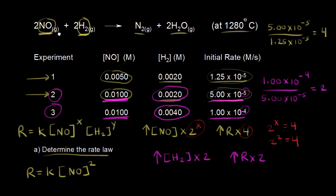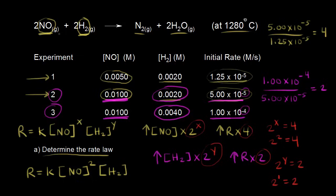So two to what power equals two? Two to the Y equals two, so Y equals one — two to the first power is two. The reaction is first order in hydrogen. We can now put hydrogen to the first power into the rate law. We've determined our complete rate law.